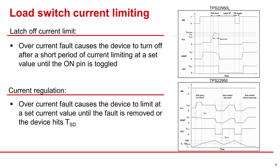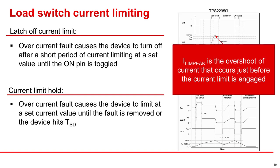There are two different types of current limiting with our load switches: latch off current limit and regular current limit. Latch off means that once the current limit engages, it holds for a short period of time before it turns off, and the enable pin must be toggled to turn it back on. Regular current limit holds the current limit until the fault is either removed or thermal shutdown is hit. It will then retry once falling below the thermal shutdown falling threshold. ILM peak is the overshoot of current that occurs before the current limit is engaged.